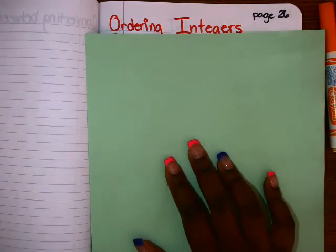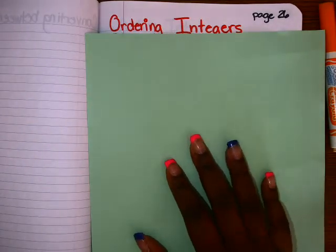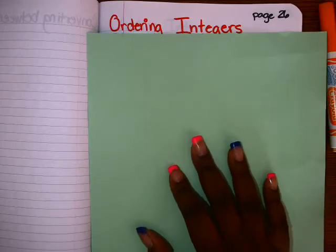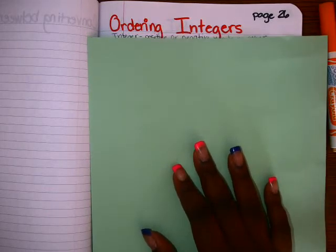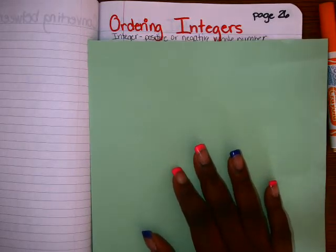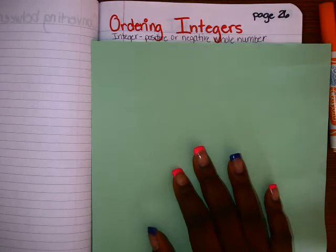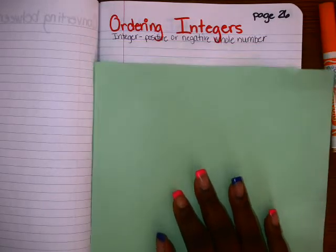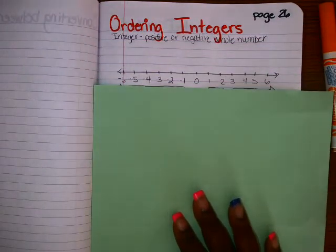Hello students. Today I'm going to talk to you about how to order integers and what is an integer. An integer is a positive or negative whole number. Usually we see integers on a number line.